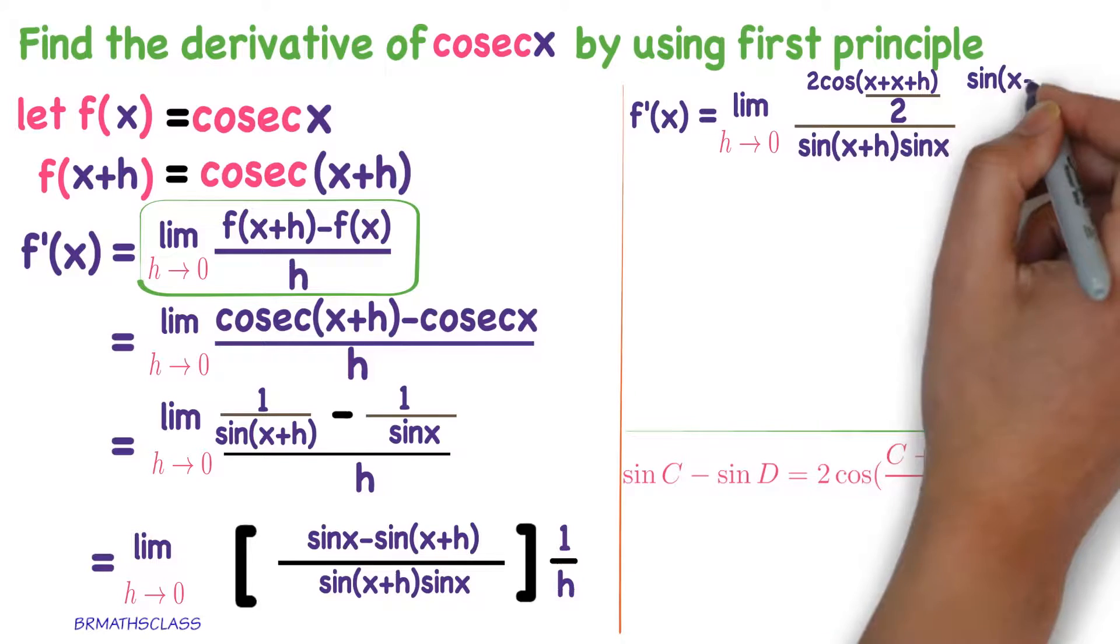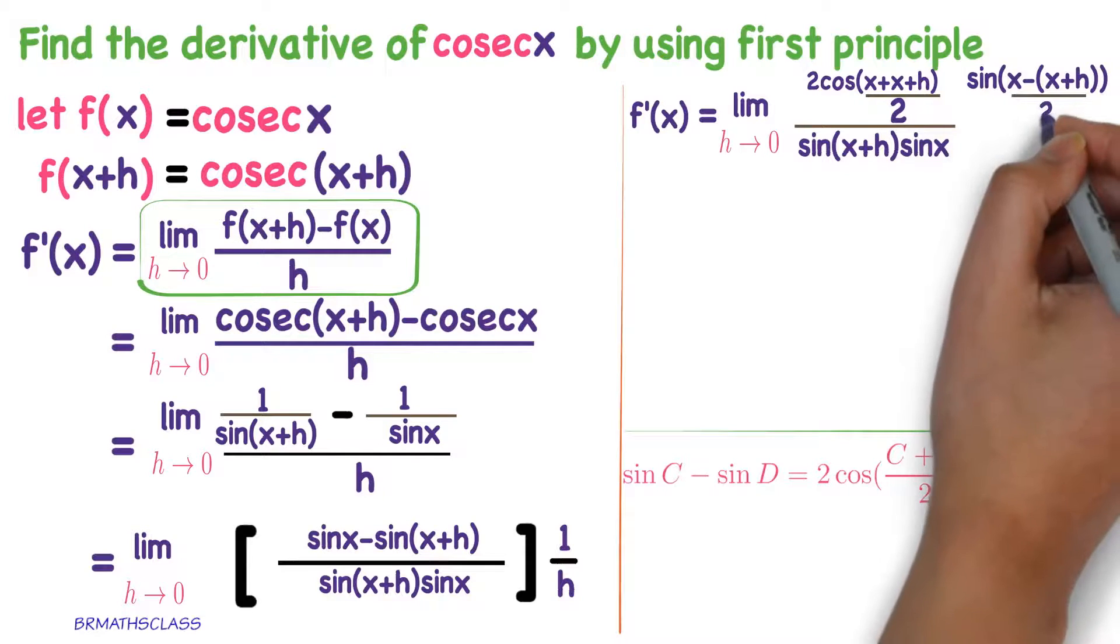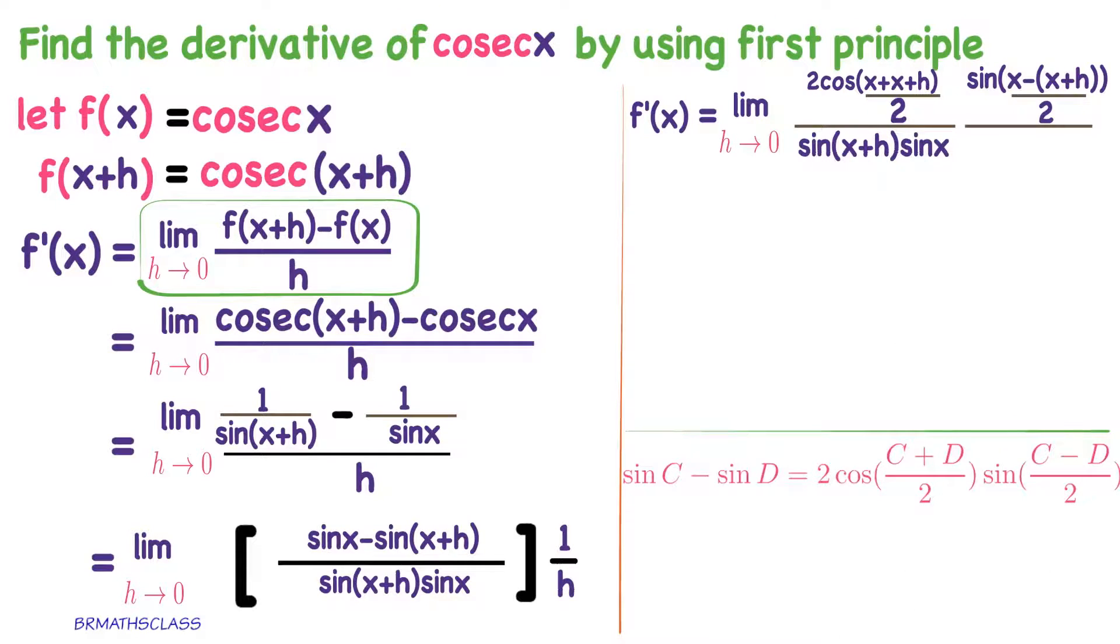Now, continuation. 2 cos c plus d by 2 into sin c minus d by 2. C is x, d is x plus h. Whole divided by, in last step, whole divided by 1 by h is written as divided by h.